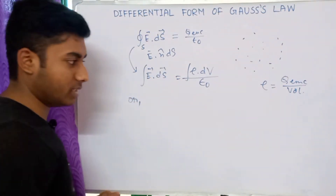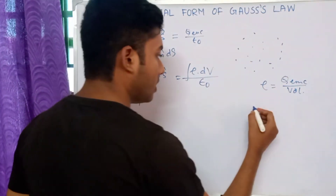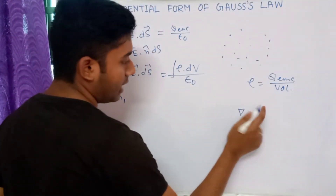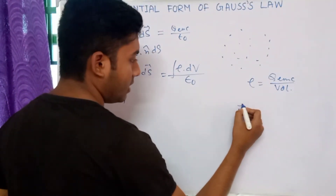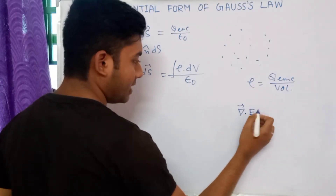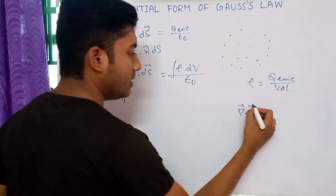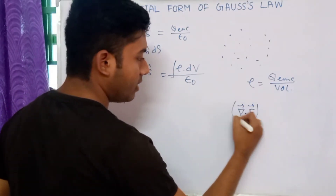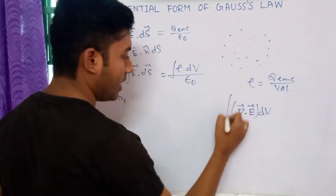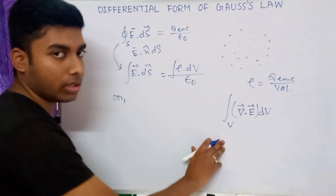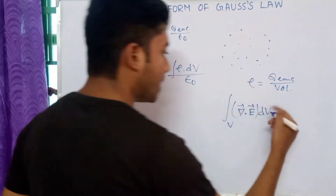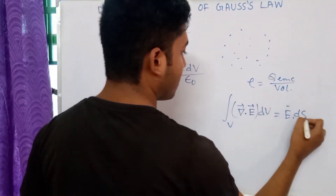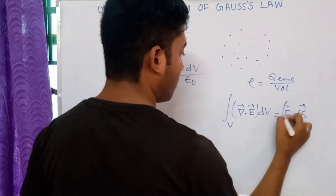Now, applying the Gauss Divergence Theorem: the theorem tells us that the volume integral of del dot E (the divergence of the electric field vector) into dV is equal to the surface integral of E dot dS over a closed surface.